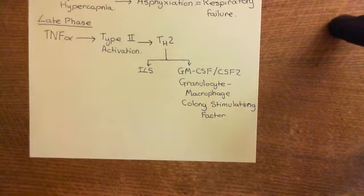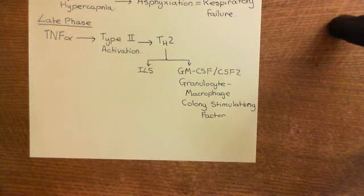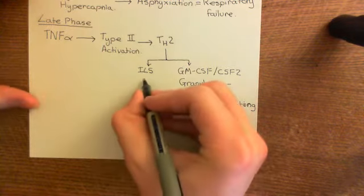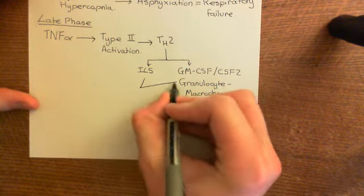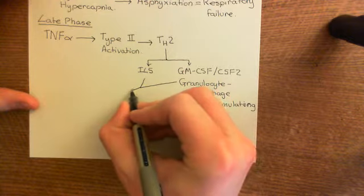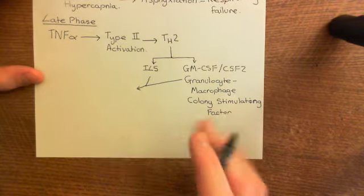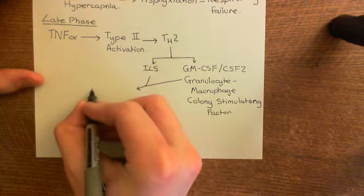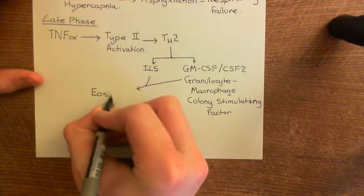These two cytokines — IL-5 and GM-CSF — rise hugely in the lamina propria during the late phase of the asthmatic attack. They lead to the recruitment of another type of leukocyte: one of the most dangerous cells the immune system has — the eosinophil.